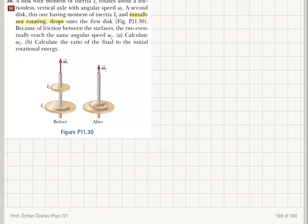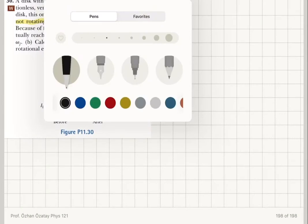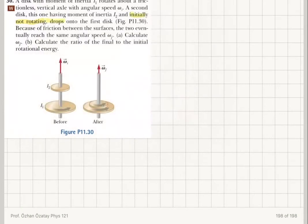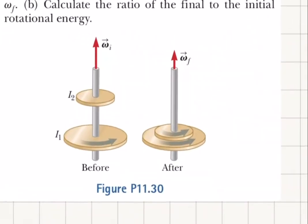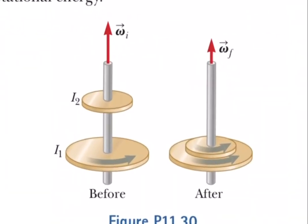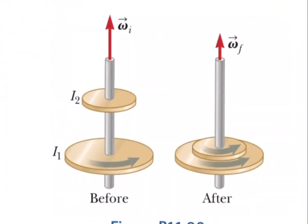Because of friction between the surfaces, the two eventually reach the same angular speed omega final. Calculate omega final. Calculate the ratio of the initial to the final rotational kinetic energy.